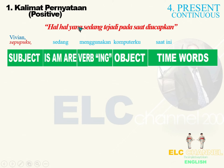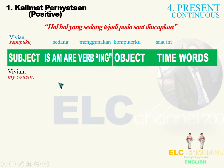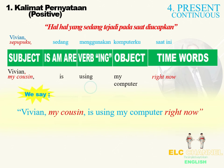Fungsi yang pertama dari kalimat Present Continuous, yaitu digunakan untuk menceritakan hal-hal yang terjadi pada saat diucapkan. Contoh: Vivian, sepupuku, sedang menggunakan komputerku saat ini. Ada penanda waktu 'saat ini'. Bahasa Inggrisnya: Vivian, my cousin, is using my computer right now.